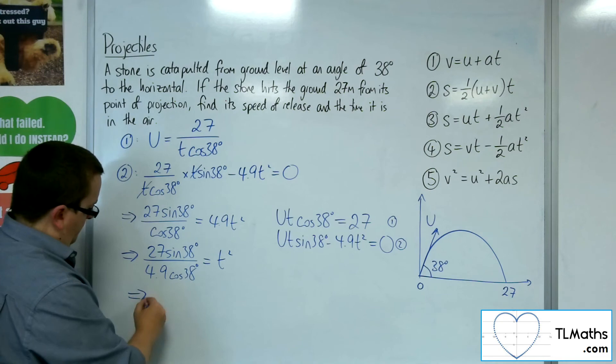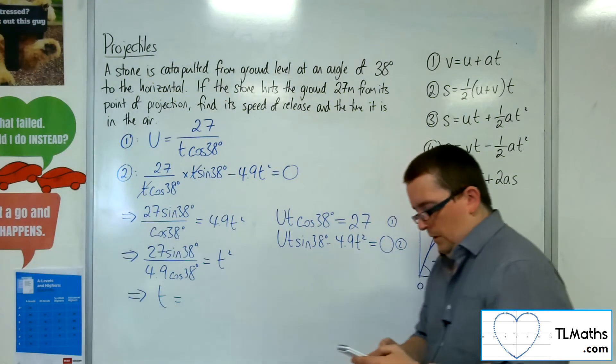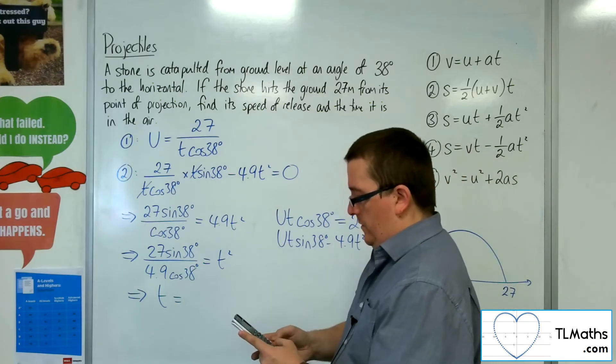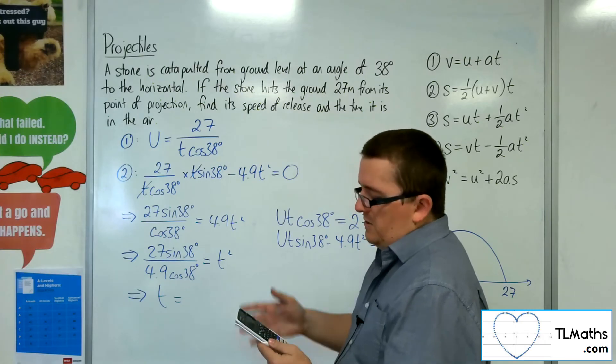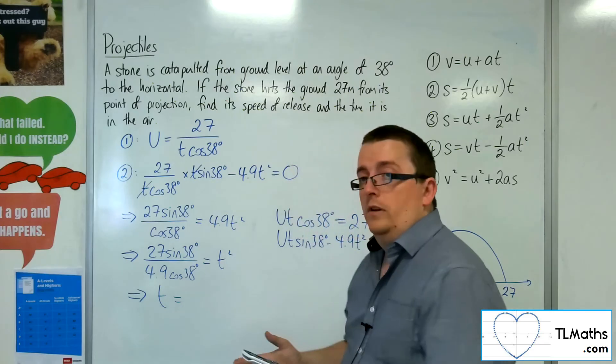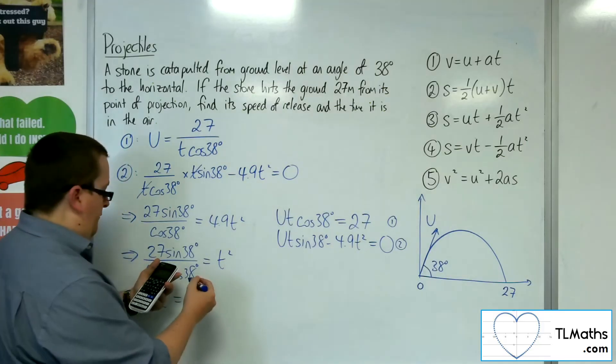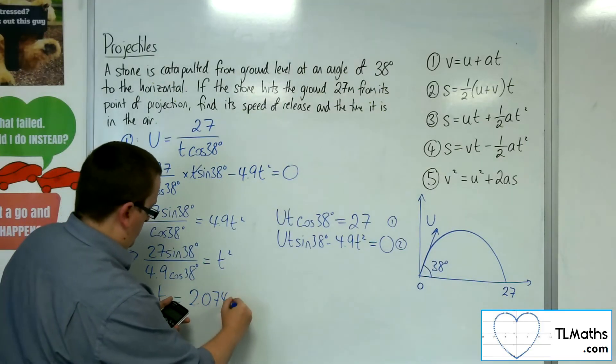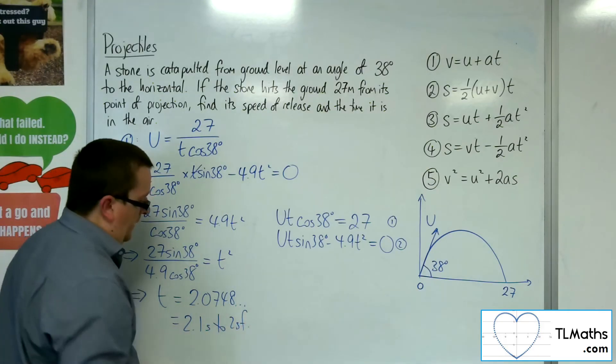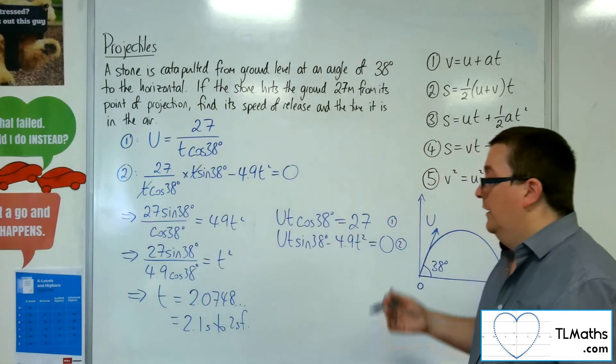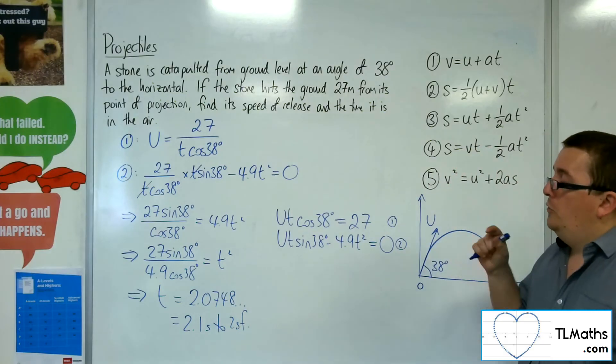And that's t squared. So I can pop that into my calculator and square root it. So we've got the 27 sine 38 divided by 4.9 times cosine 38, which gets me 4.305, etc. Square root that, and I get 2.0748, etc. So 2.1 seconds to two significant figures. Because gravity is given two significant figures, so the time is only good for that as well. So that's how long the stone is in the air.